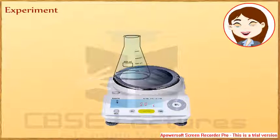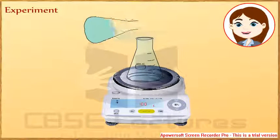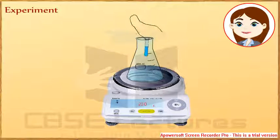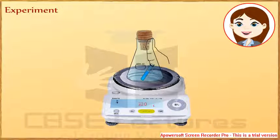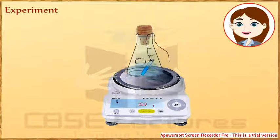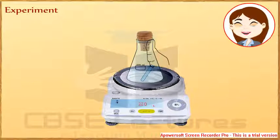Experiment: Take a 5% solution of barium chloride in a conical flask. Take a 5% solution of sodium sulfate in a test tube. Suspend the test tube in the flask with a thread and fix the flask with a cork. Weigh the complete system and subtract the weight of the conical flask. Now loosen the cork so that the thread is loosened and the test tube falls into the flask. The two solutions mix.